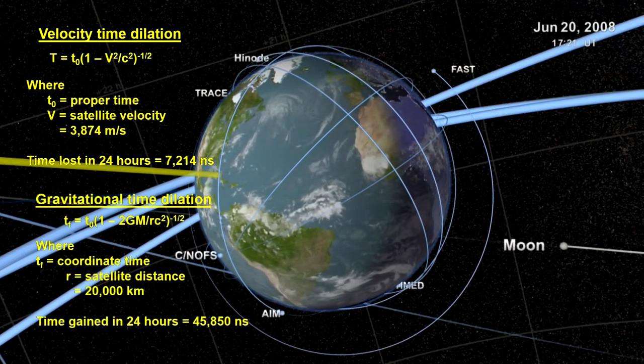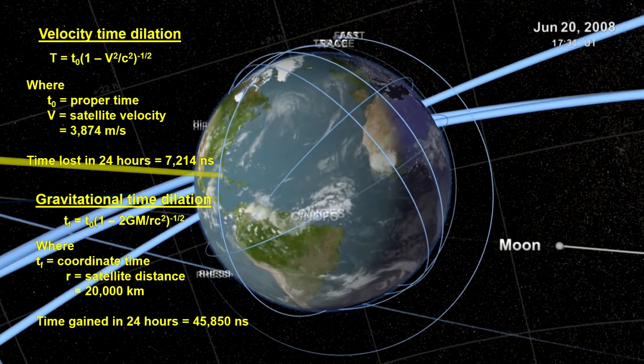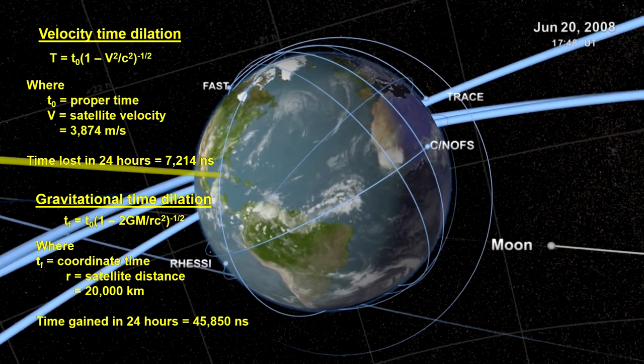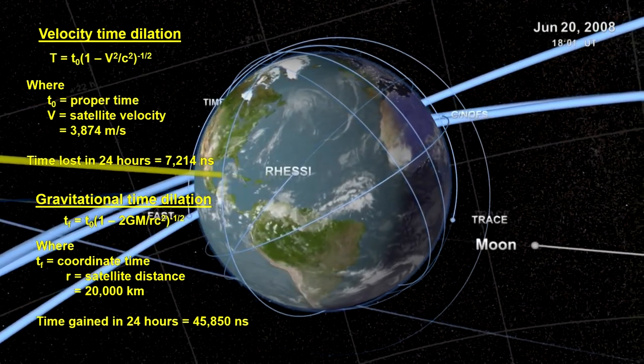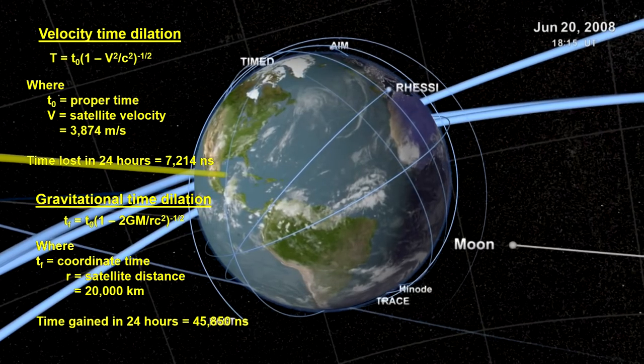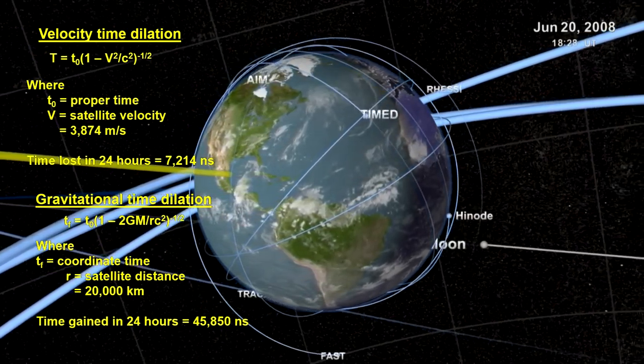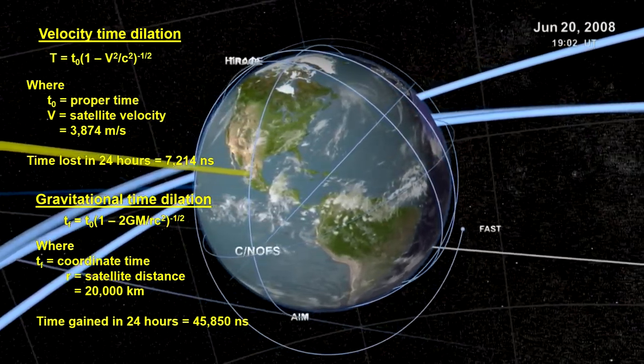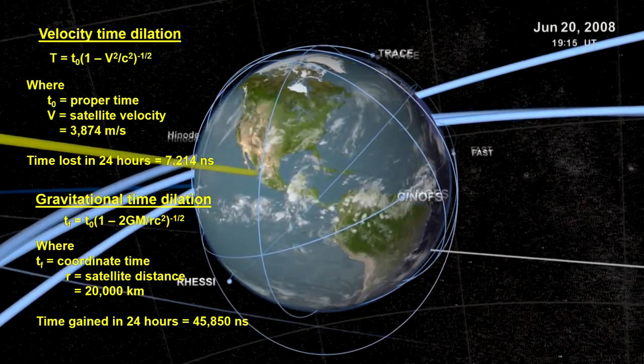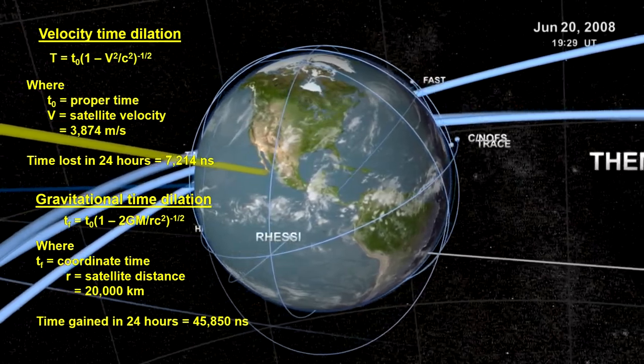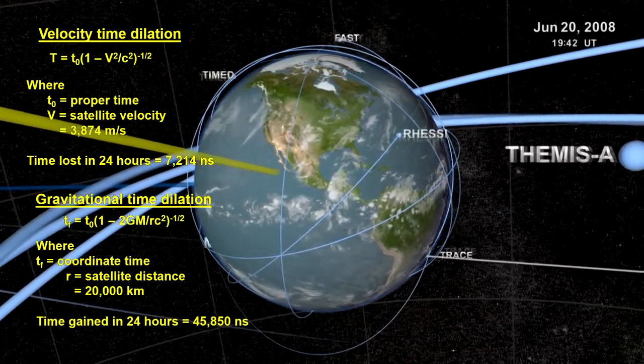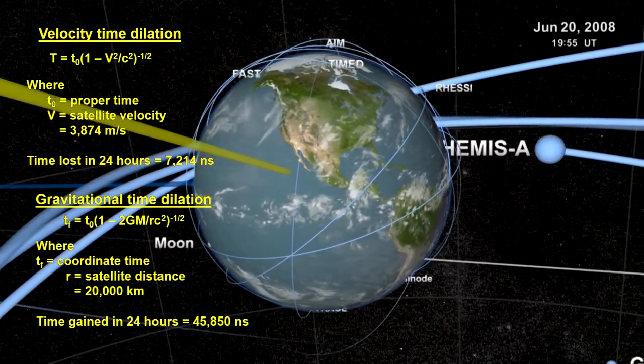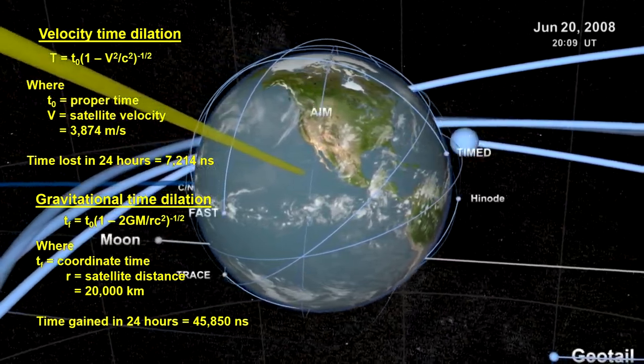They must also take into account gravitational time dilation, due to their being further away from the Earth than clocks on the ground. Based on the Schwarzschild metric, calculations show that the satellite's clocks will gain over 45,000 nanoseconds a day due to this general relativity effect. The accuracy of our GPS system is strong evidence for the correctness of general relativity.